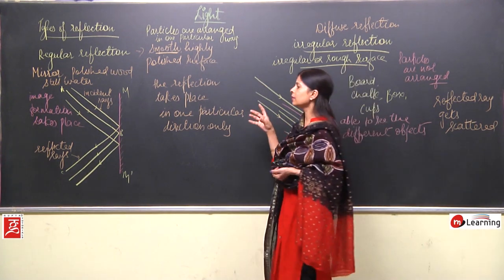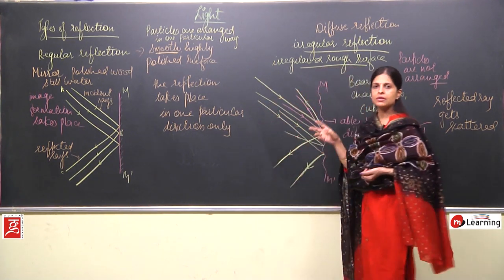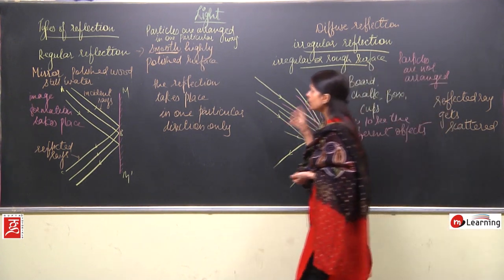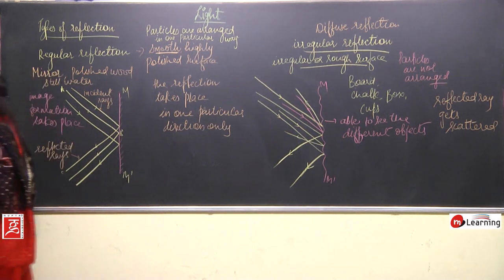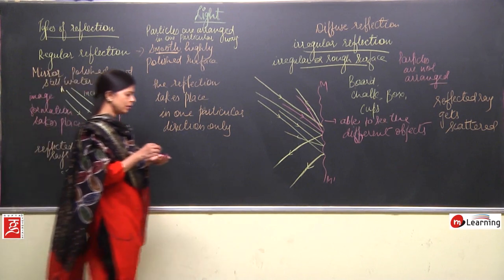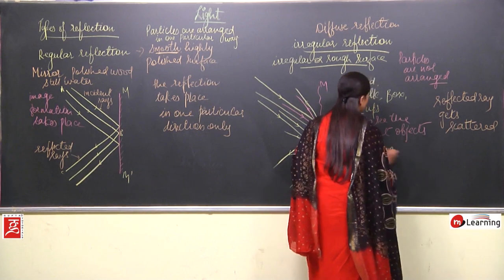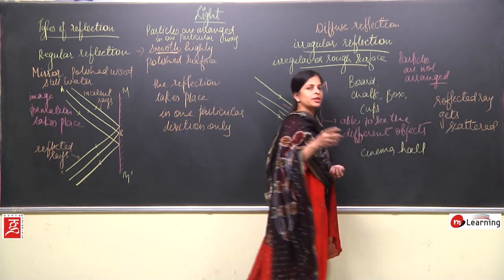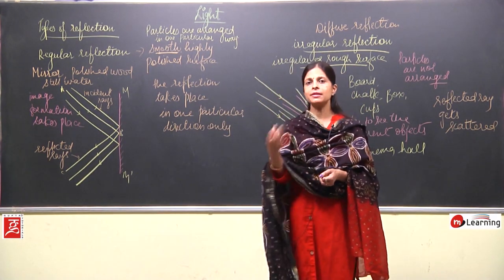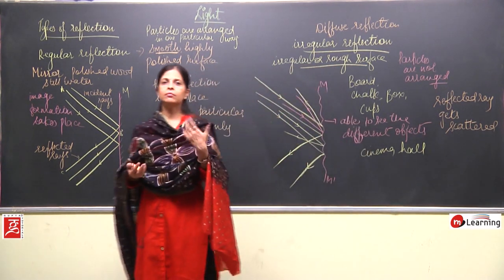In regular reflection, image formation takes place. In irregular reflection, we are able to see the objects because light gets scattered in all different directions. This is how we can distinguish between regular and irregular reflection. A good example of both is a cinema hall — when a projector beam falls on the screen, it gets scattered in all different directions and that is why we are able to see the movie.